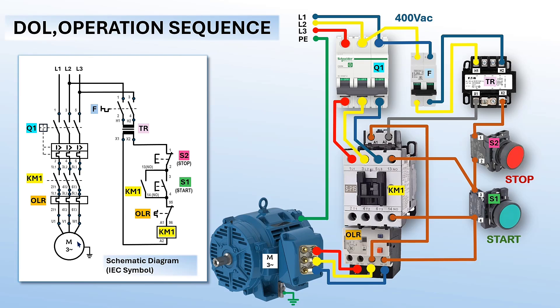Using the schematic and pictorial diagram, I will explain the DOL starter sequence of operation. Be aware that the actual operation sequence takes place in a fraction of a second. The sequence of operations is presented slowly and in detail to be easy to follow and understand. Imagine that the white dots represent voltage present in the feeders or wire.